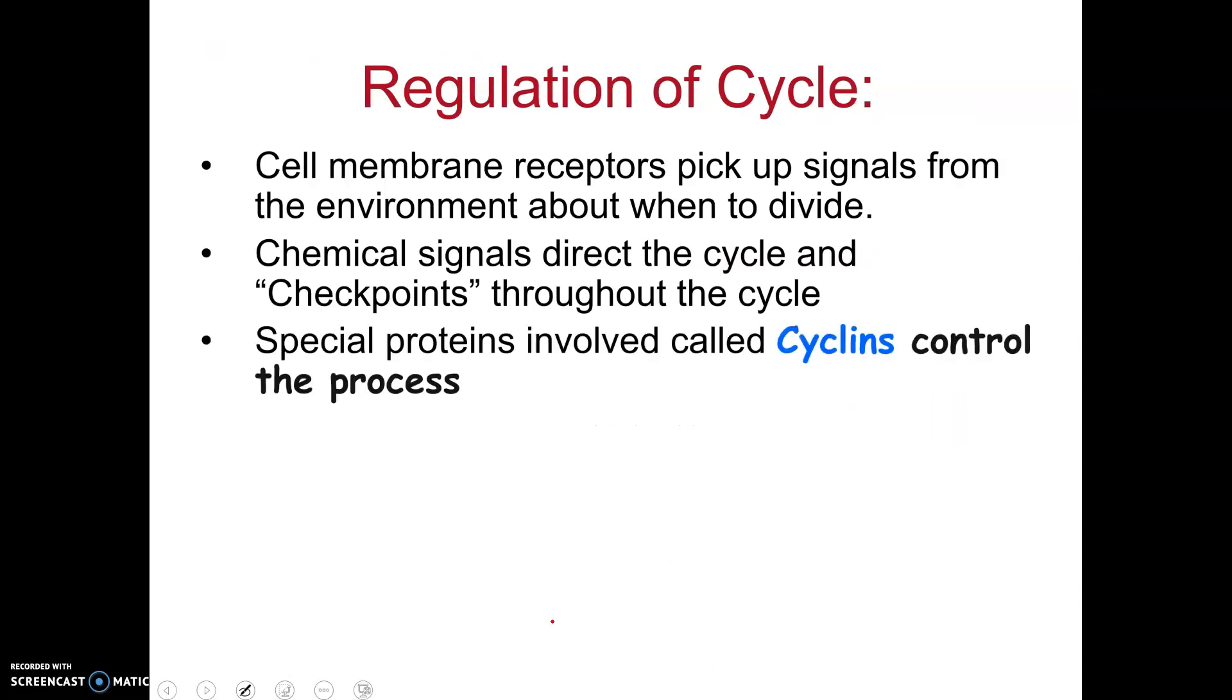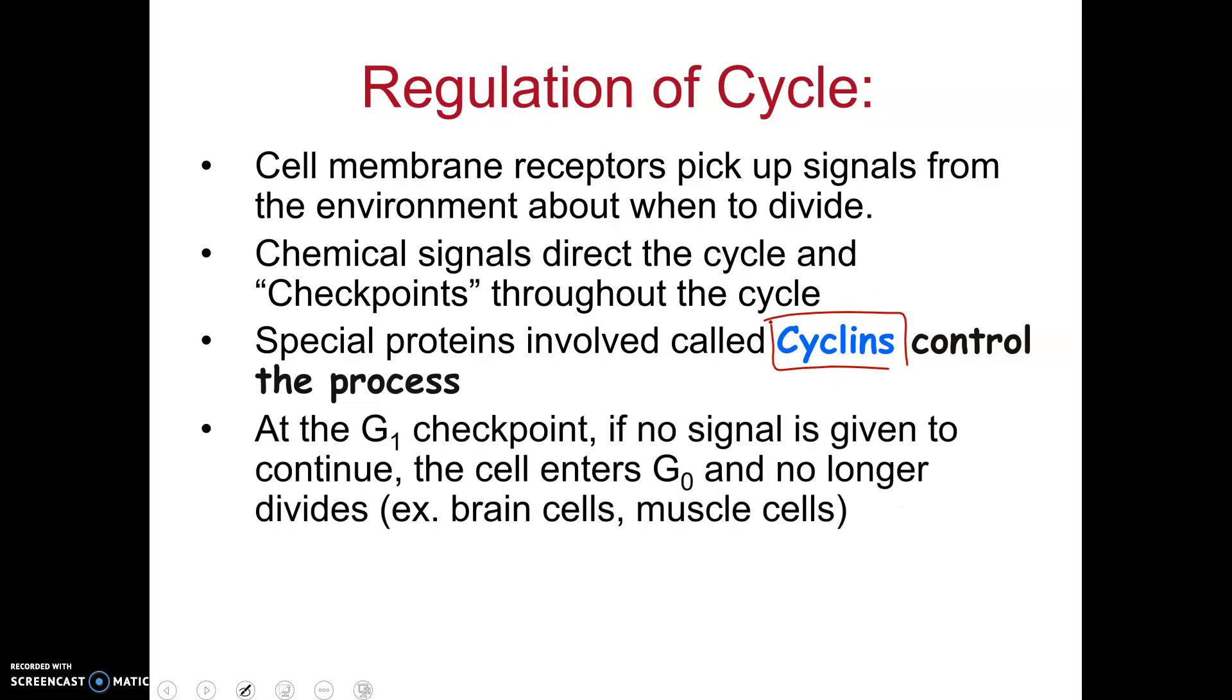So what regulates the cell cycle? A couple things. There are these checkpoints, and there are these chemical signals. There are special proteins in the cell called cyclins, and they control cell division. Now, if there's no signal at G1, remember, there's a checkpoint here. So we have G1, we have S, G2, and one of the checkpoints is here, at the end of G1. If no signal is given to tell the cell to go to S, the cell will enter something called G0, like brain cells.